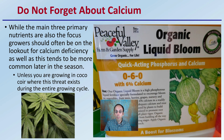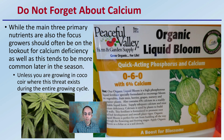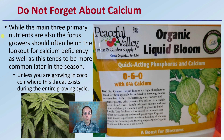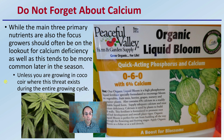Do not forget about calcium. It's just another nutrient to take into consideration. While the main three primary nutrients are the focus, growers should also be on the lookout for calcium deficiency, as this tends to be more common later in the season. Unless you're growing in coco coir, where the threat exists during basically the entire growing season, calcium should be kept in mind particularly during that later flowering phase of the growth cycle.